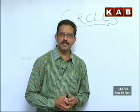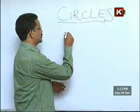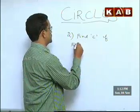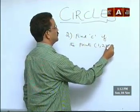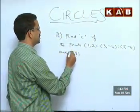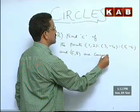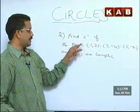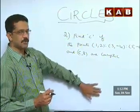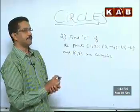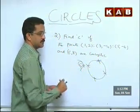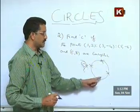Now we go to the second question. In the second problem, just look at this: Find C if the points (1,2), (3,-4), (5,-6) and (C,8) are cyclic. Please look at this question. Because I want to work out the standard models so that you will have a clear idea about them. Now what he is telling is all these four points are on a circle. We have to find C. This is what we exactly want.